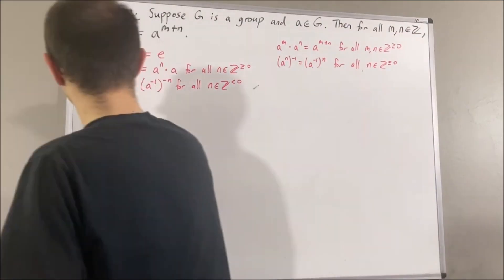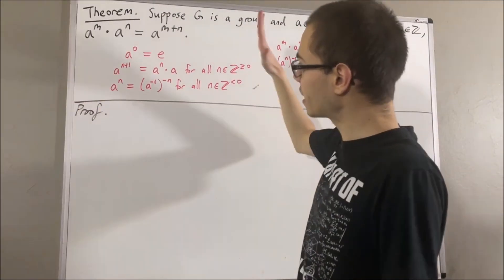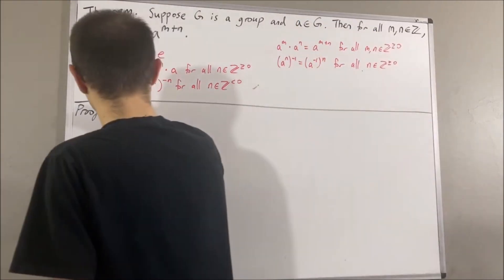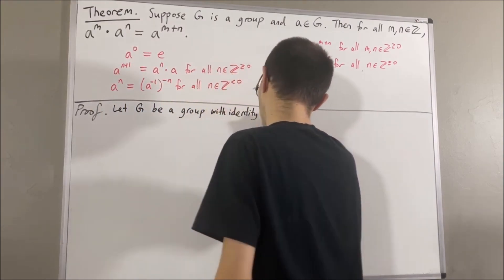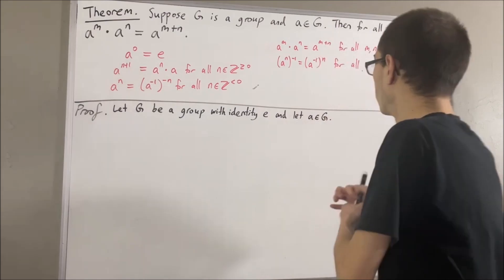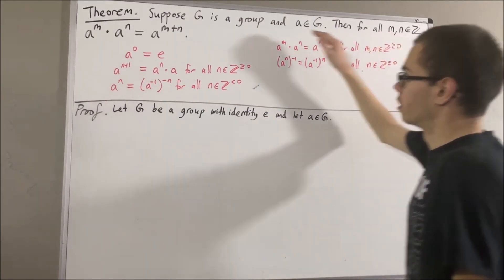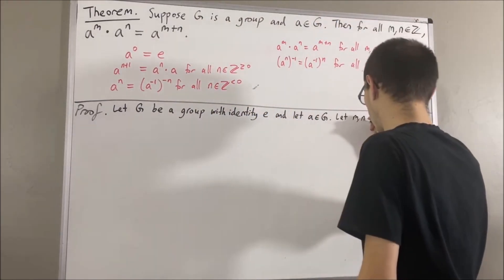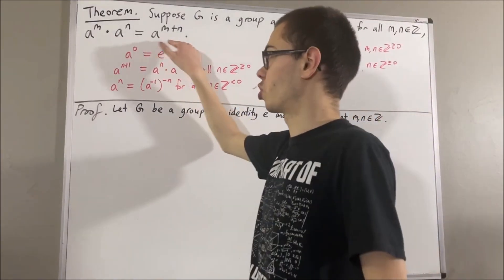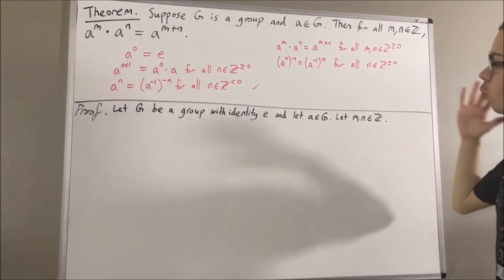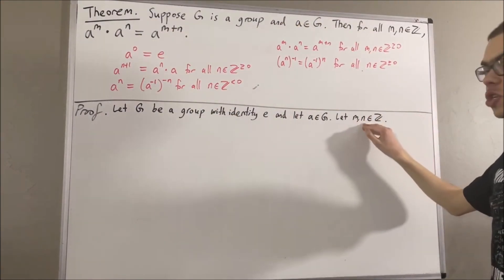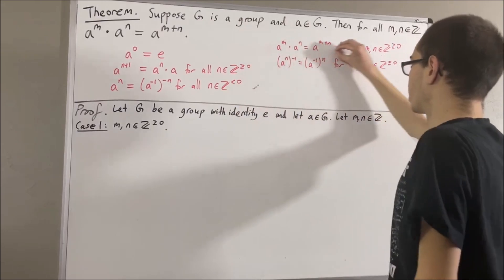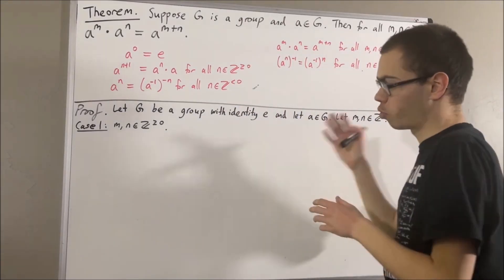Let's get into proving this theorem. Let G be a group with identity element E, and let A be an element of G. We want to show for all integers M and N that this equality is true. So let's give ourselves two arbitrary integers M and N. To prove this, we're going to split into several cases. One possibility is that both M and N are integers greater than or equal to 0. Well then, according to this result, we're done — we've already proven this case.